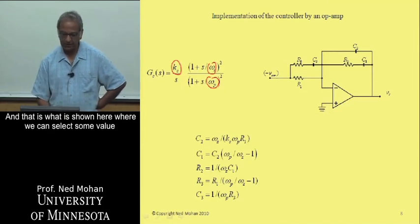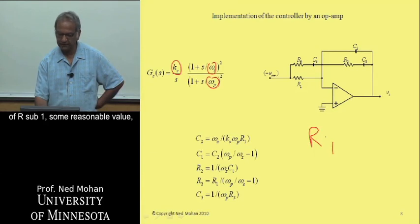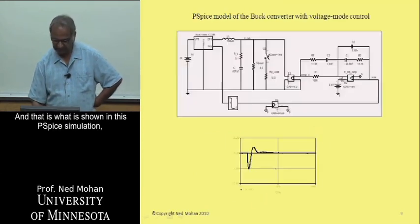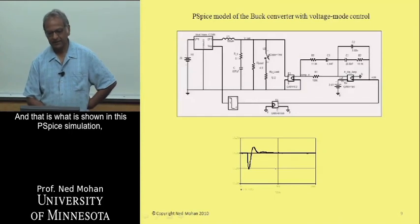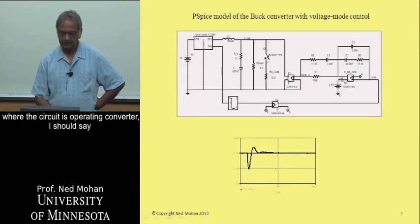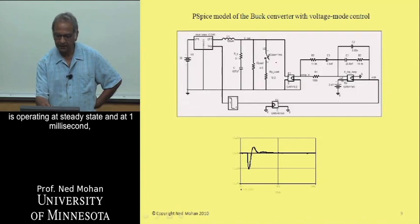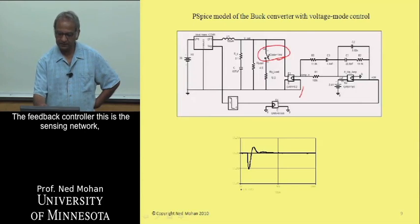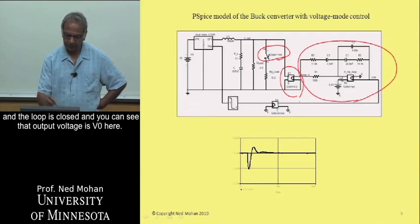Having calculated all the unknowns in the controller transfer function, we can implement it in practice using an op-amp. We can select a reasonable value for R1, and then all other element values are calculated from the resulting equations. This is demonstrated by simulation, where the converter is operating in steady state, and at one millisecond some extra load is switched on, with the feedback controller and sensing network shown and the loop closed. The output voltage V0 is shown.